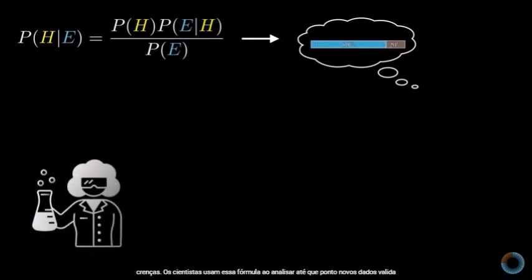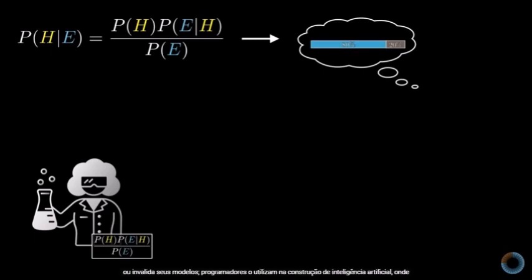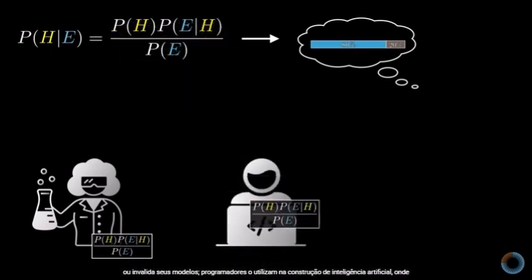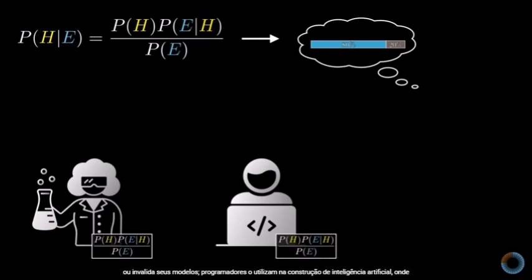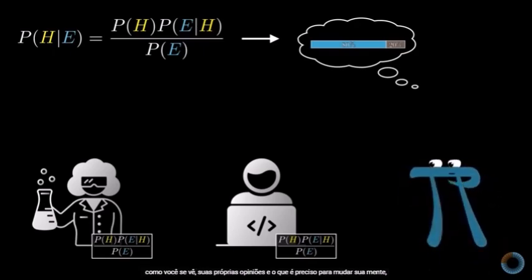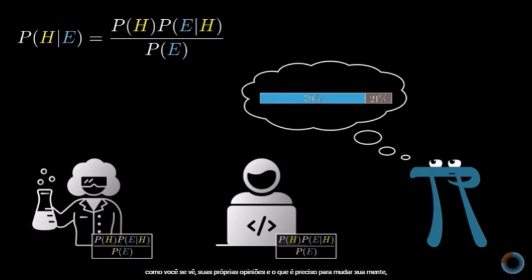Scientists use this formula when they're analyzing the extent to which new data validates or invalidates their models. Programmers use it in building artificial intelligence, where you want to explicitly and numerically model a machine's belief. And for the way that you view yourself and your own opinions — Bayes' theorem has a way of reframing how you even think about thought itself.